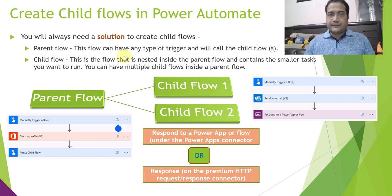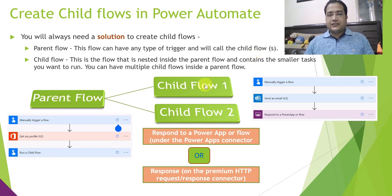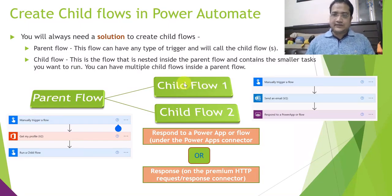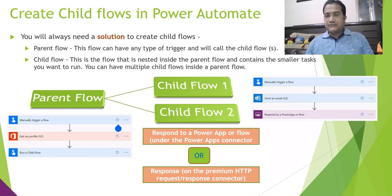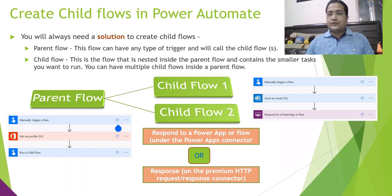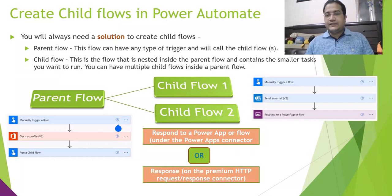The parent flow can have any type of trigger and it will call the child flow — that's why we call it a parent flow. The child flow is nested inside the parent flow and contains a small, focused task. Child flows are created so that you can minimize the complexity of a single flow and break down your existing logic or business requirement into multiple flows.